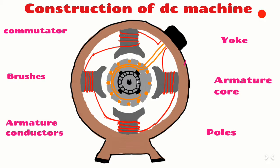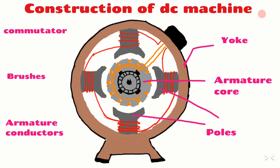Hello everyone, this is Moesh Sharma. Today we are going to learn the construction of a DC machine. We already discussed what is a DC generator, its principle and working in lecture one. Here we discuss the following parts: yoke, the outermost part of the DC machine; armature core, a cylindrical drum-like structure punched with slots on the peripheral; poles, having alternate north and south poles; commutator, a split ring made up of hard-drawn copper; brushes, which offer electrical connection between commutator and load; and armature conductors, the windings placed on the slots of the armature core.